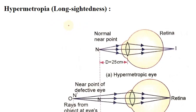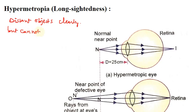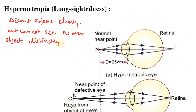A hypermetropic eye is able to see distant objects clearly but cannot see nearer objects distinctly, that means clearly. The near point is somewhat greater than normal, that is 25 centimeters, which makes reading difficult. The image is formed behind the retina.